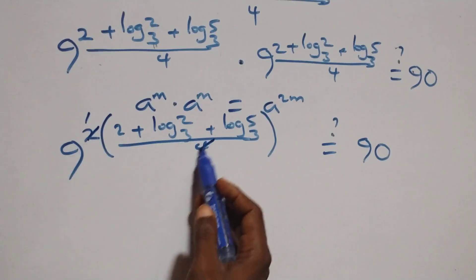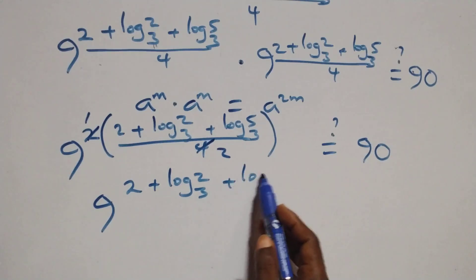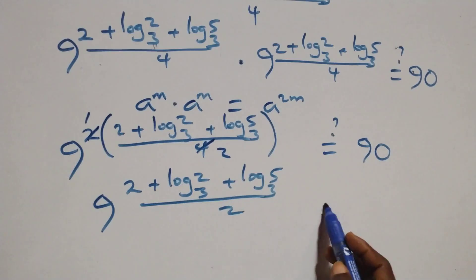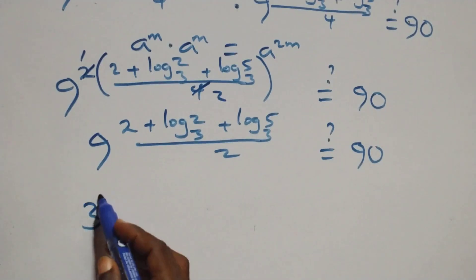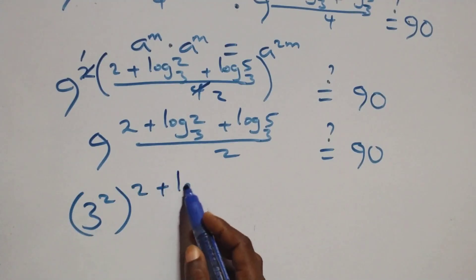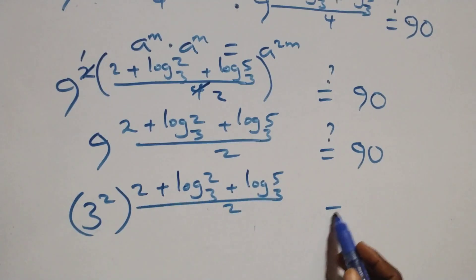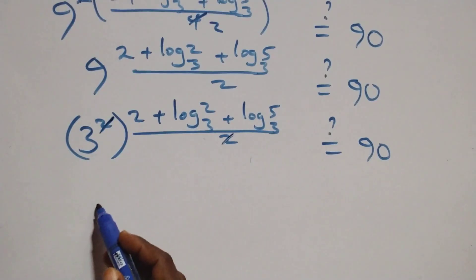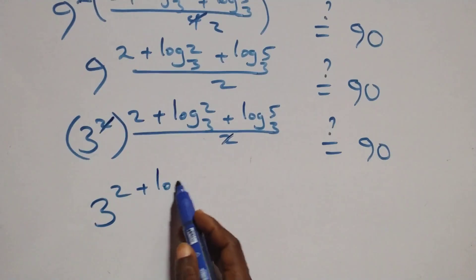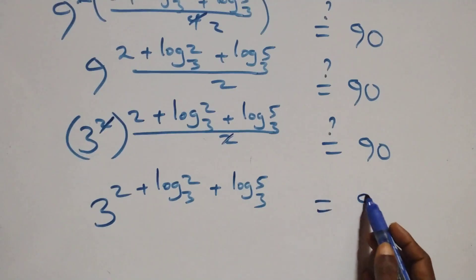The power multiplies: 2 over 4 simplifies to 1 over 2. So we can write 9 raised to power (2 plus log 2 base 3 plus log 5 base 3) all over 2, equals 90. Then we rewrite 9 as 3 squared. So we have 3 squared raised to power (2 plus log 2 base 3 plus log 5 base 3) over 2 equals 90. The powers multiply and the 2s cancel, giving us 3 raised to power (2 plus log 2 base 3 plus log 5 base 3) equals 90.